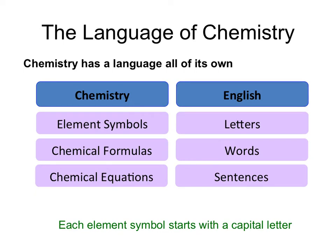Chemistry has a language all of its own. Early on, you learn the letters of the alphabet, which you put together to make words. You string the words together to make sentences, and that's how you learn to communicate with others. Chemistry has a similar process. You learn element symbols, which are put together to make chemical formulas, which are strung together to make chemical equations, and that's how we communicate in chemistry.